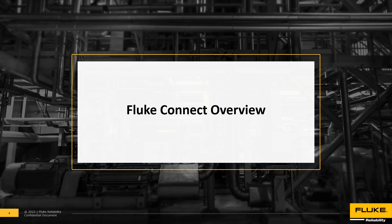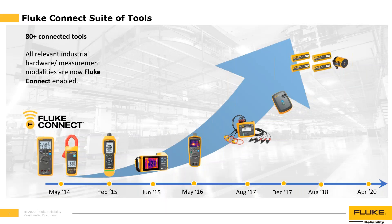Our first section is a high-level overview of Fluke Connect. Fluke Connect works with over 80 different tools in 11 different categories, including digital multimeters, clamp meters, installation testers, vibration meters, scope meters, process meters, insulation testers, infrared cameras, power loggers, and power quality monitors. The easiest way to tell if a tool works with Fluke Connect is if it has the letters FC in the model name.